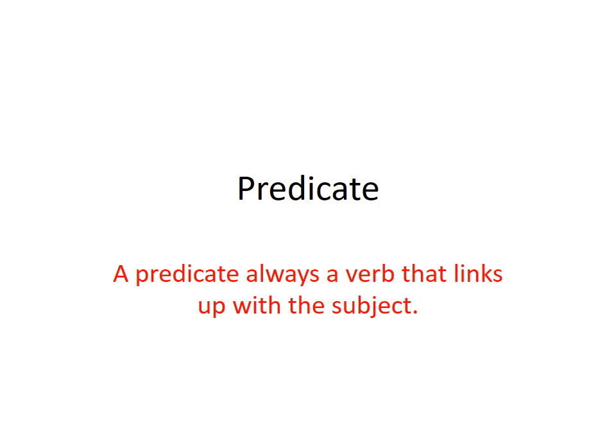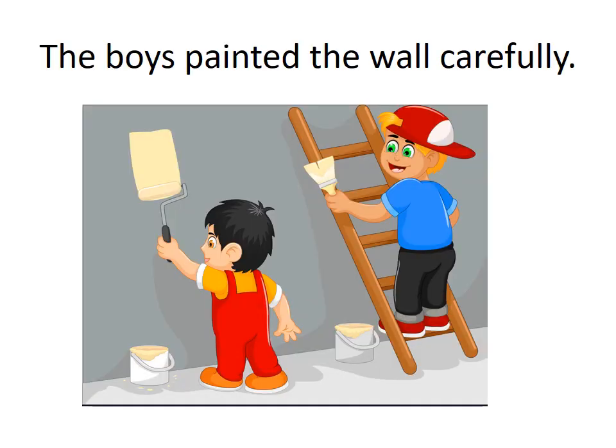Now let's look at predicate. The predicate always contains a verb that links up with the subject. It tells us what the subject is doing — it refers to the action of the subject. For example: 'The voice painted the wall carefully.' The subject is 'the voice.' What did the voice do? The voice painted the wall carefully. So 'painted the wall carefully' is the predicate.